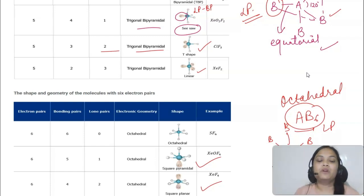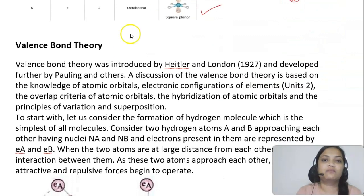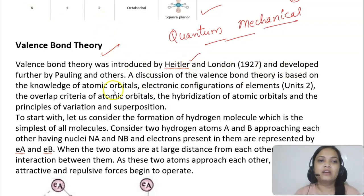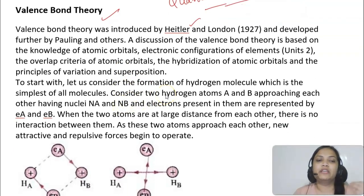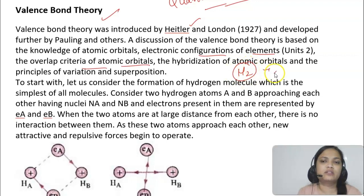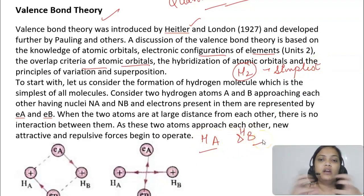Because of VSEPR's limitations, two other theories were developed: Valence Bond theory and Molecular Orbital theory, both based on the quantum mechanical model of the atom. Valence Bond theory was introduced by Heitler and London and developed by Pauling and others. It is based on knowledge of atomic orbitals, electronic configurations, orbital overlap criteria, and hybridization. Let us understand it through the formation of the hydrogen molecule, the simplest molecule.